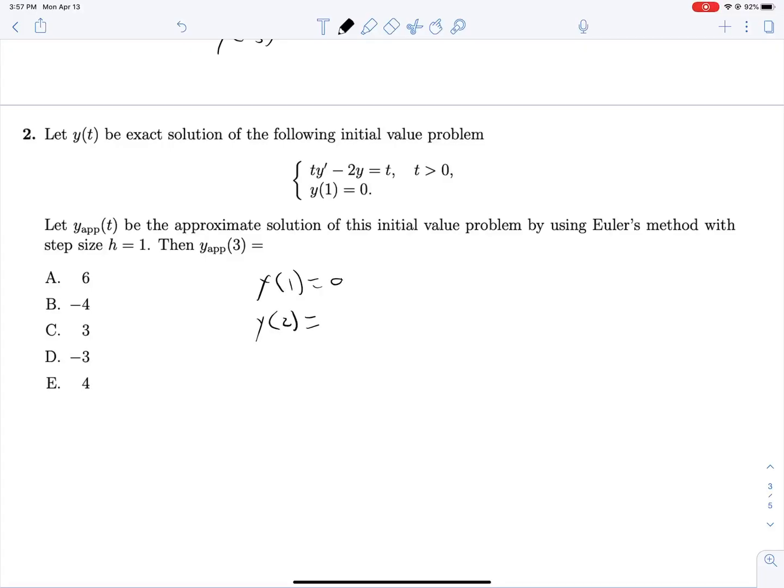This will be y at 1, so 0 plus our time step size, which is 1 multiplied by y prime evaluated at our current condition. So we're going to need to put this into a form y equals. Right now we have ty prime minus 2y equals t, let's add a 2y, and then divide out a t, 1, 2y over t.